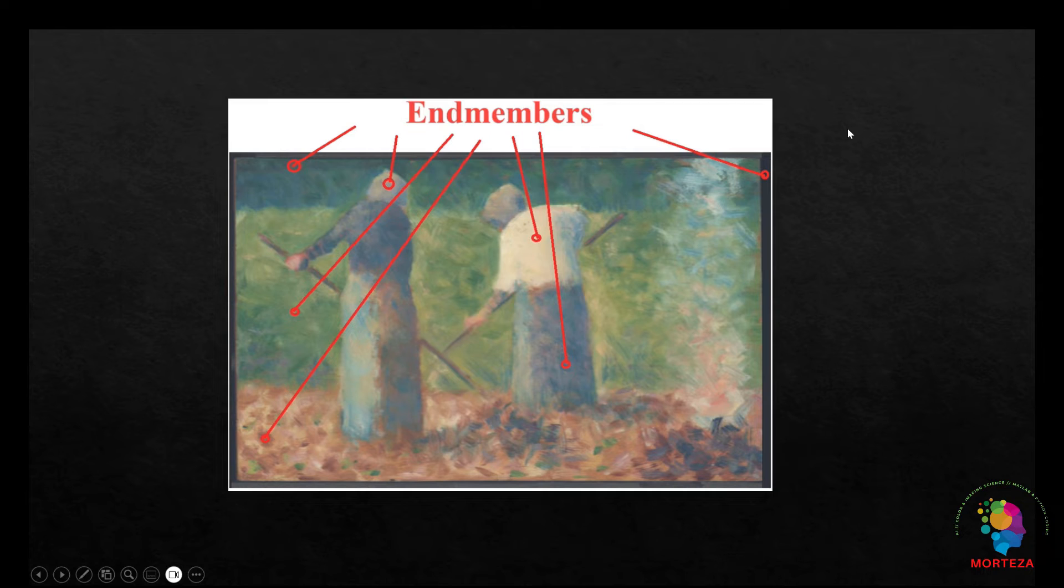The simplest way to find end members is to choose the pure pixels visually and assign them as end members. This is not the most scientific method to choose the end members, but it is not the most inaccurate way either. So as you can see, I am choosing these seven points as end members because visually they come across as pure. These seven points have already been chosen and saved. So now let's go to MATLAB and use these seven end members to classify this hyperspectral image.